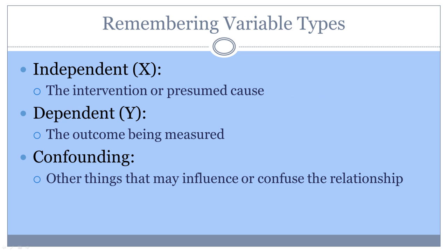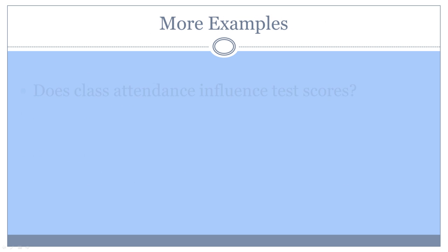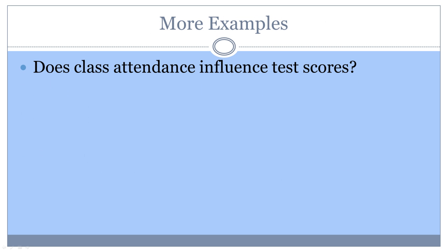To remember what these types of variables are and how to identify them, think about relationships. The dependent variable is the one that depends on something and is expected to change. Independent variables, like independent people, do not rely on others. Anything that may confuse this relationship is confounding.